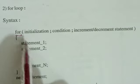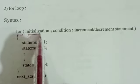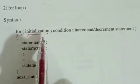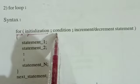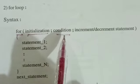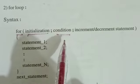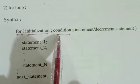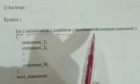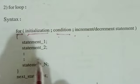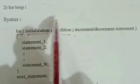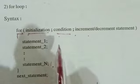First, write the keyword 'for'. In the brackets, you have initialization — you'll be assigning a value to a variable. Then comes the condition, which checks something like less than or greater than. After that, you either increment or decrement the variable value.